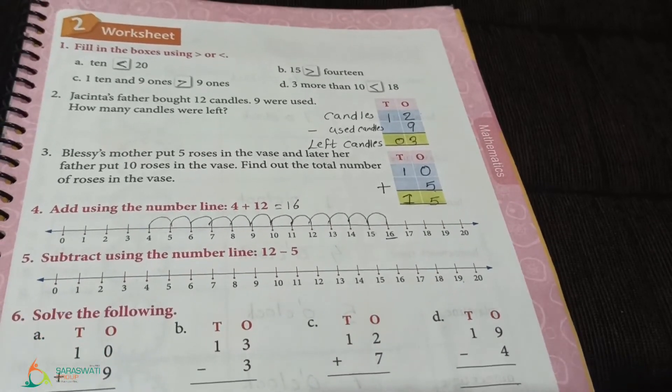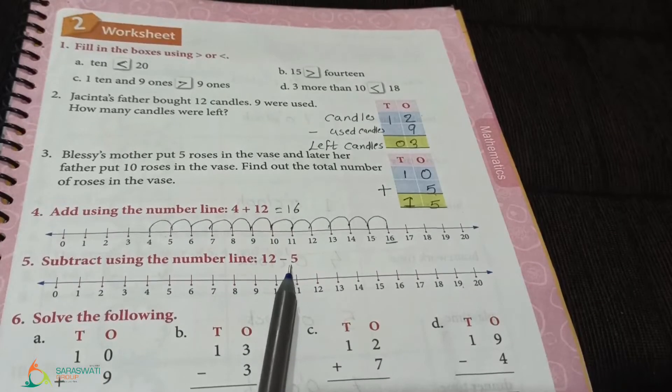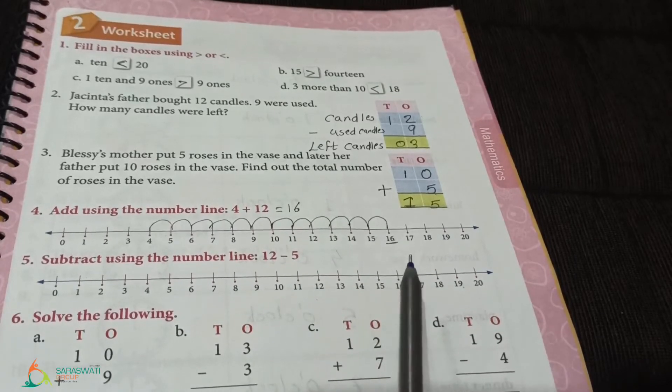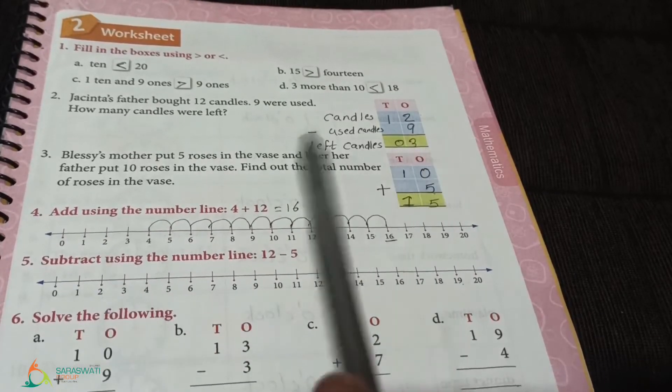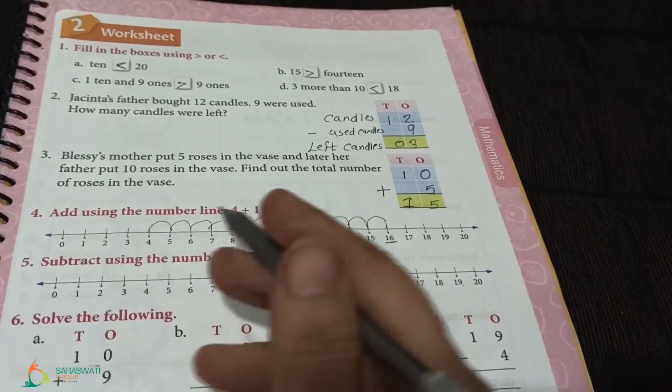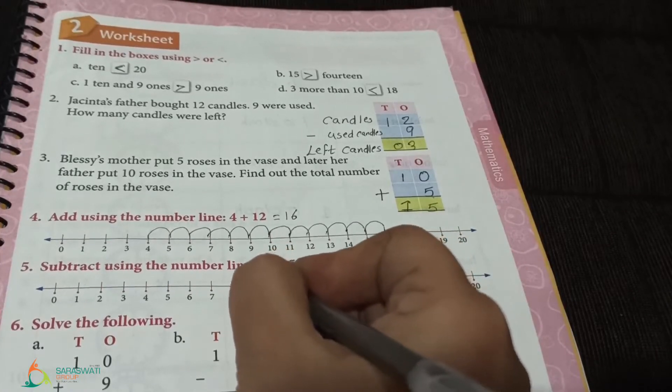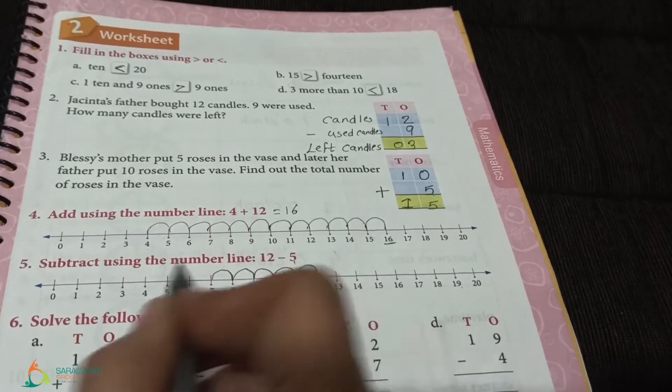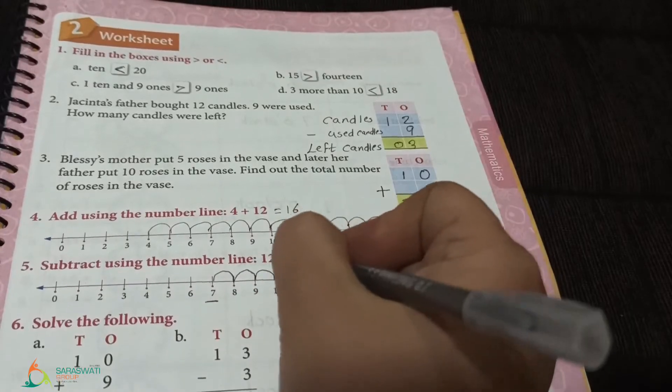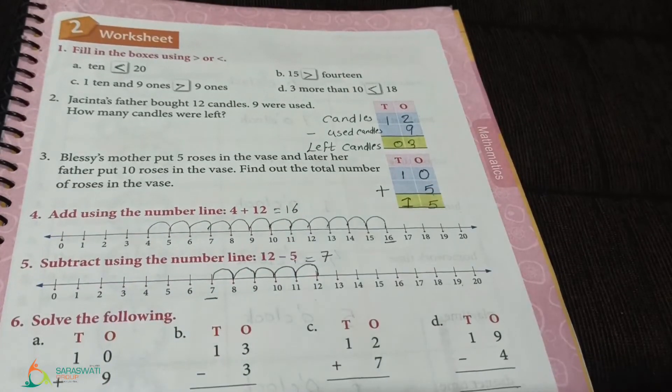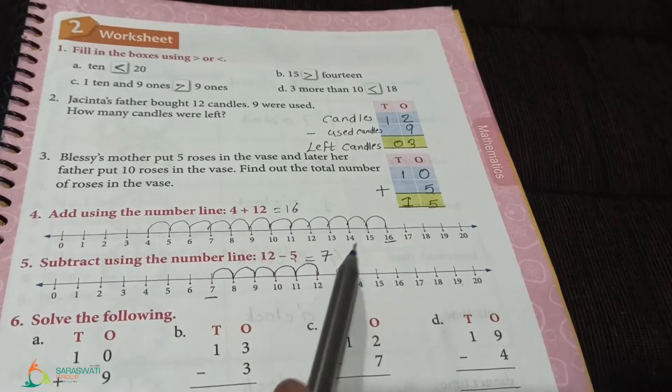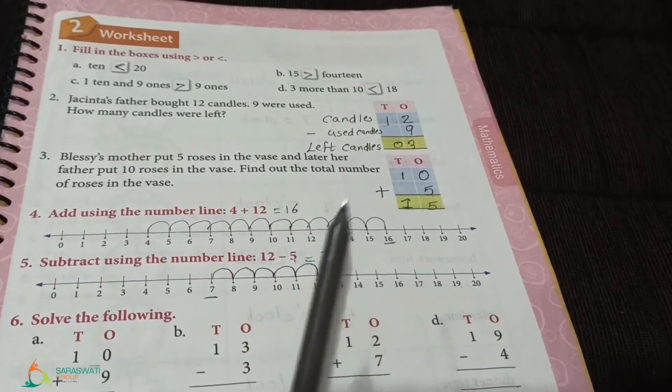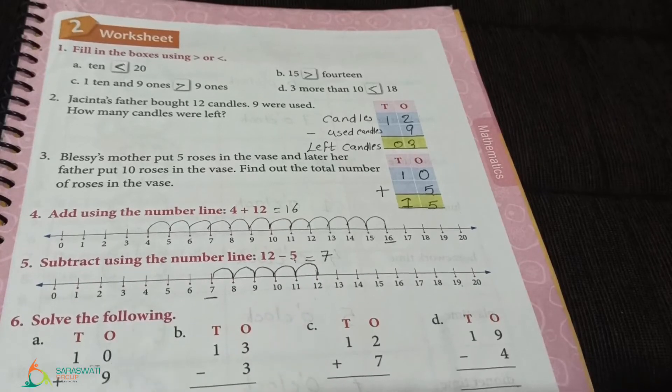Similarly, subtraction. Subtract using number line, 12 minus 5. First of all, we will find 12 on the number line. It is here. Subtraction means counting backward, not forward. So, minus 5 - we take 5 counts backward: 1, 2, 3, 4, and 5. We got 7. So, the answer is 12 minus 5 is 7. Children, do not make the mistake - in addition, always counting forward, going ahead. In subtraction, counting backward, going back.